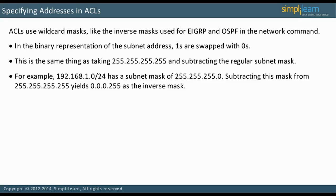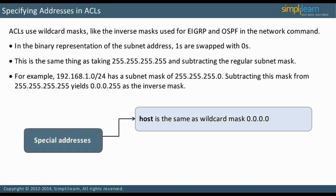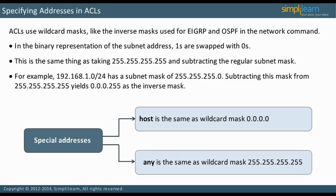Keywords can be substituted for two special addresses. The word 'host' is the same as wildcard mask 0.0.0.0, and the word 'any' is the same as wildcard mask 255.255.255.255. For example, instead of 192.168.1.1 0.0.0.0, you can enter host 192.168.1.1.